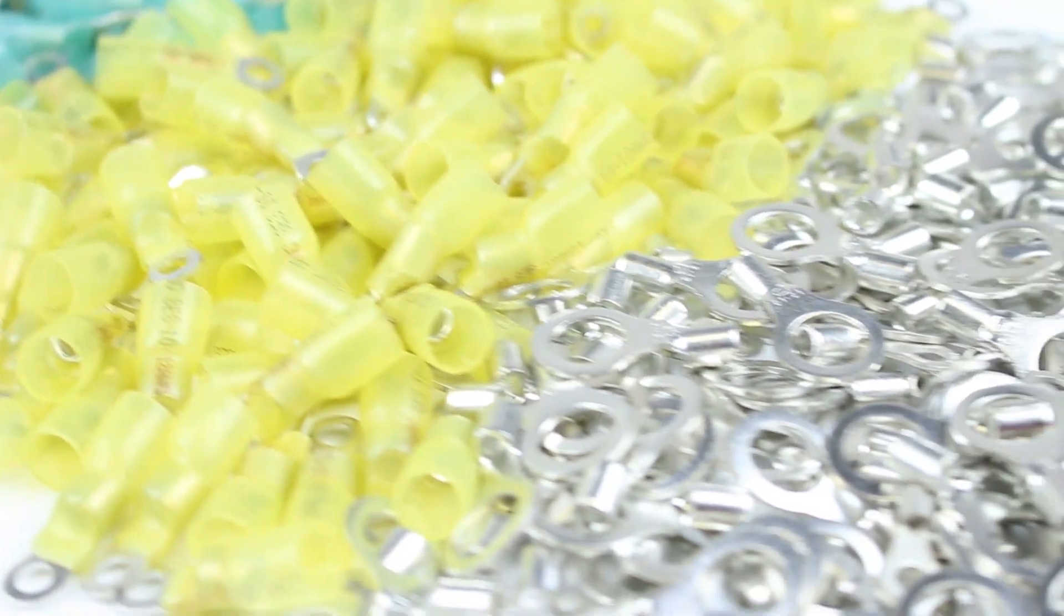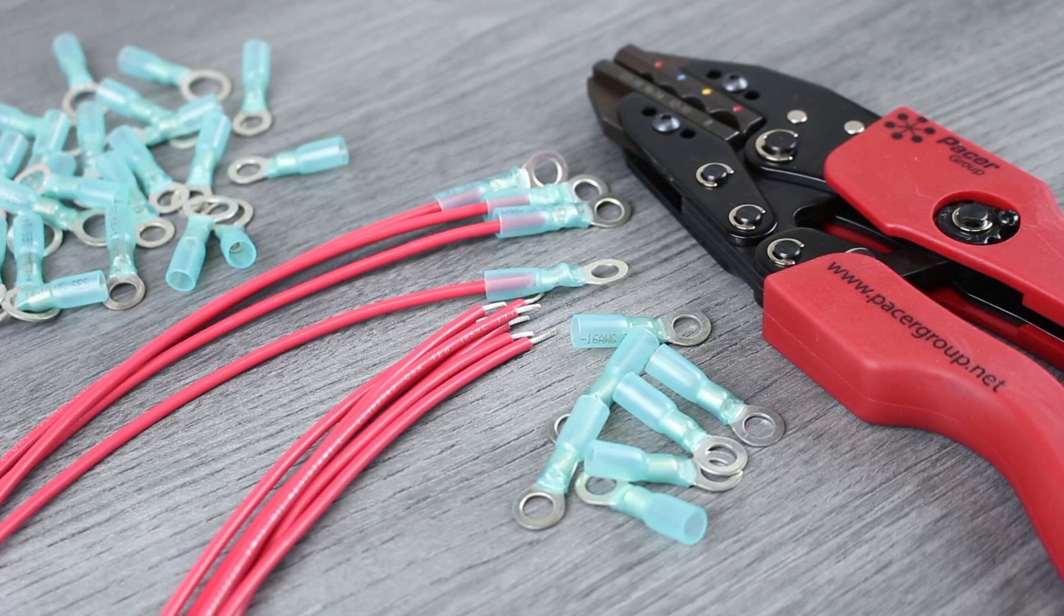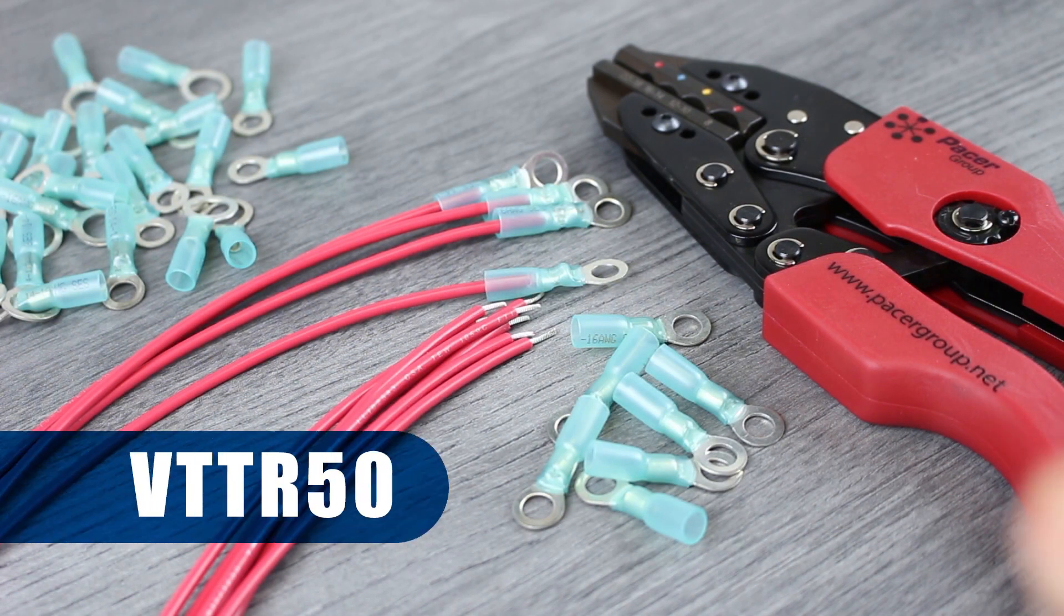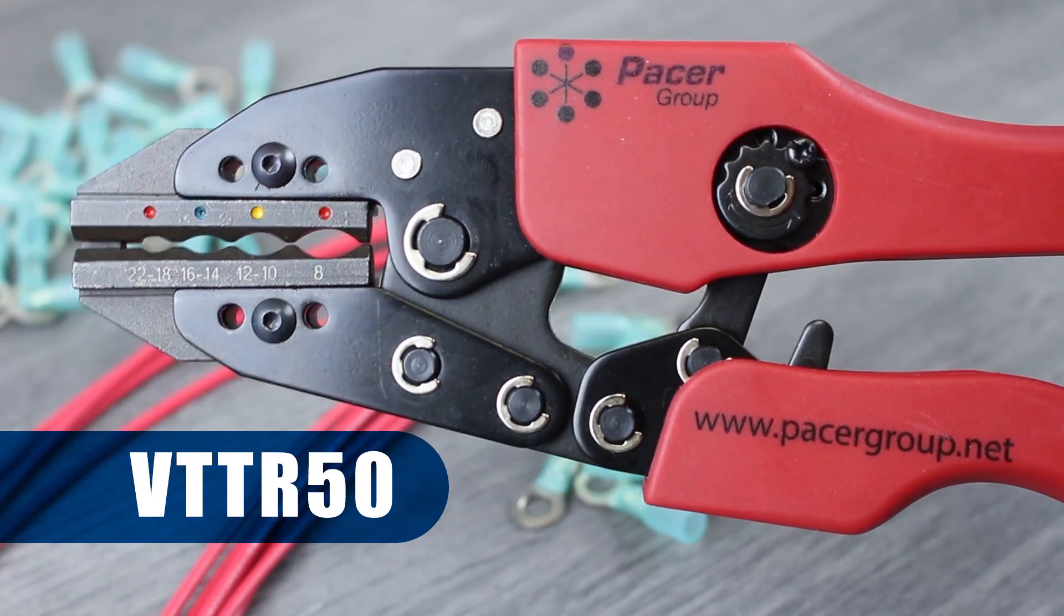Installing ring terminals is easier than you may think. The first thing you need is the proper tool. We'll be using the VTT-R50 as it can crimp 22 to 8 gauge terminals.